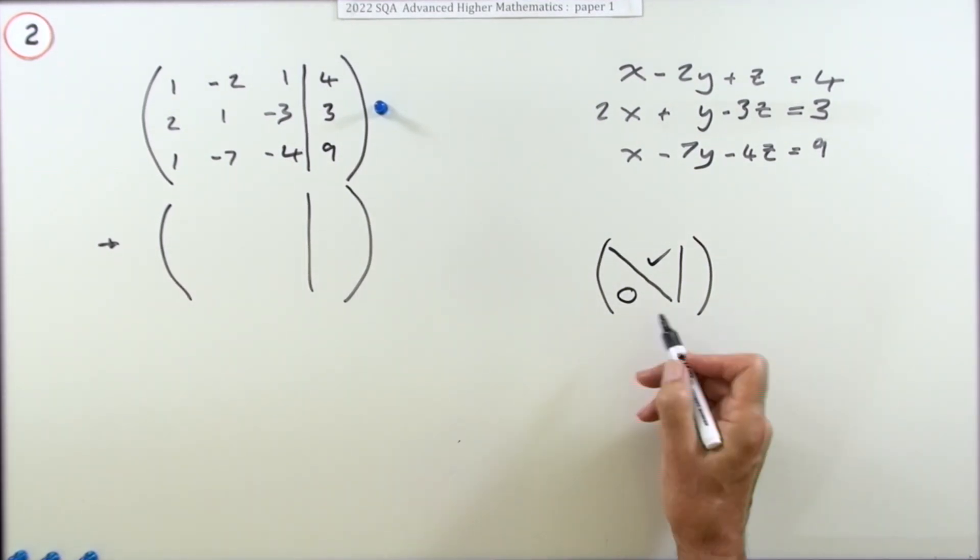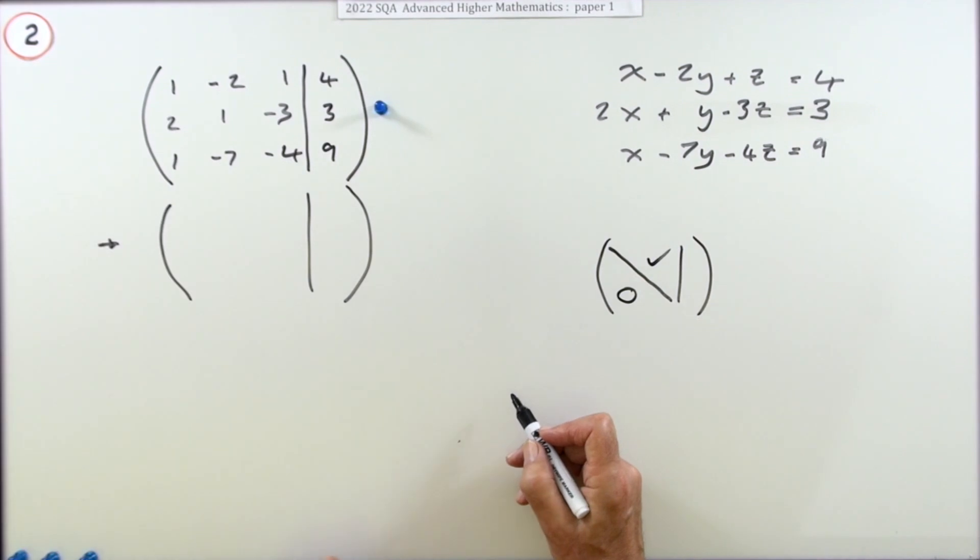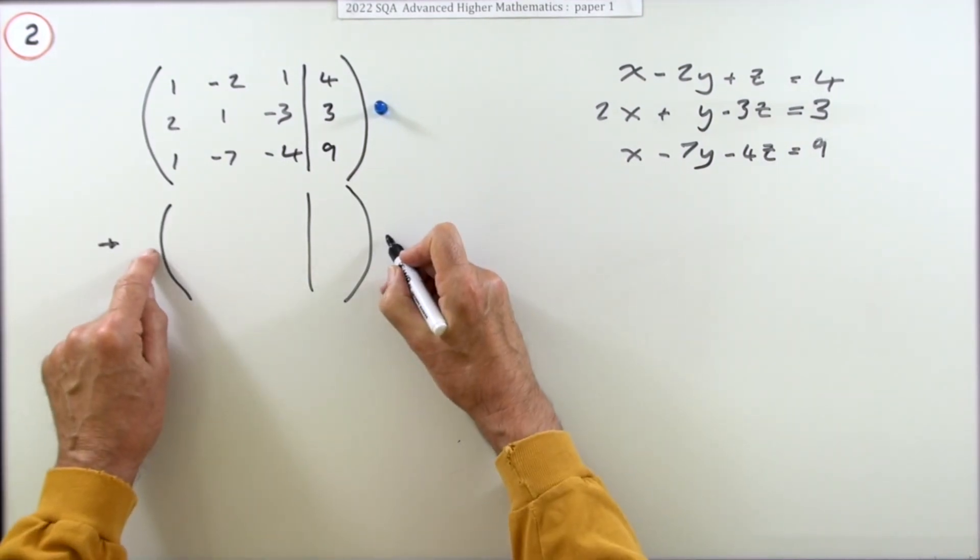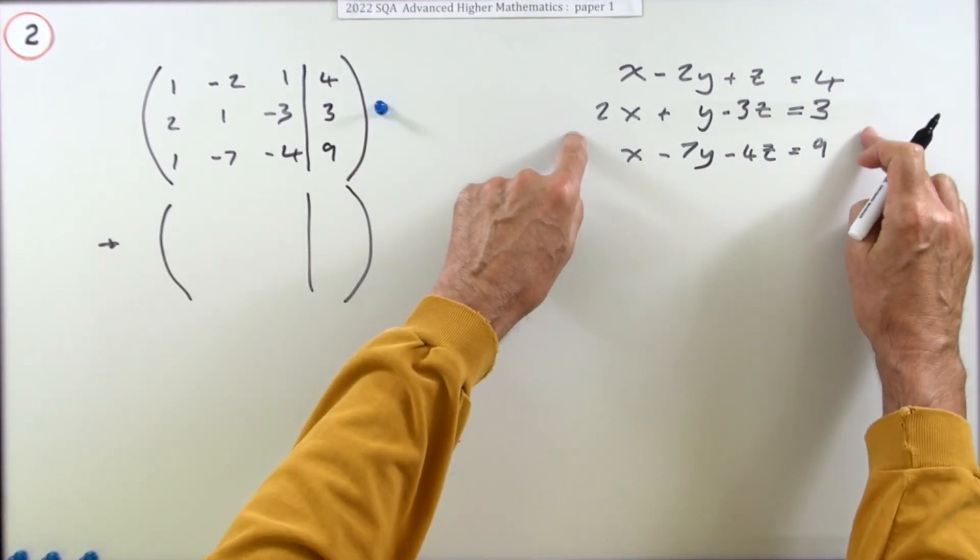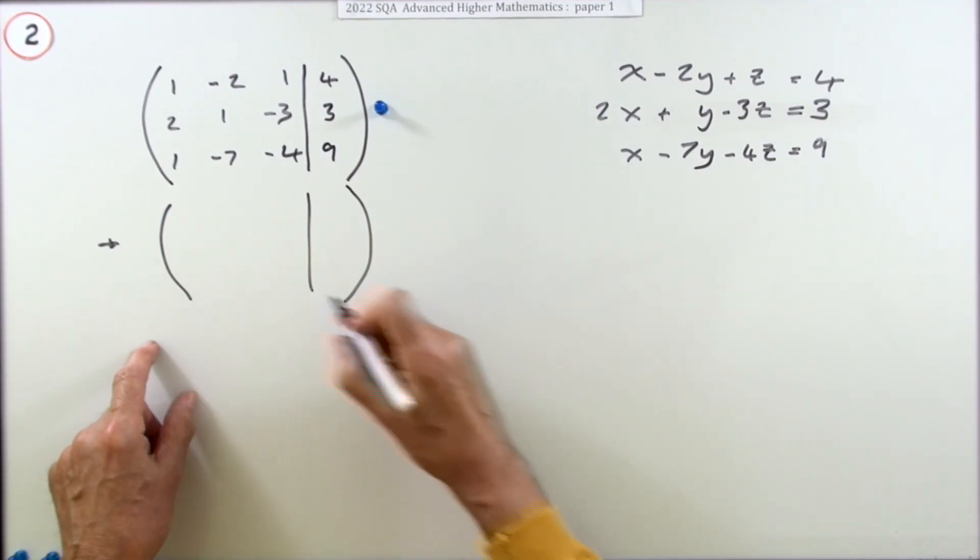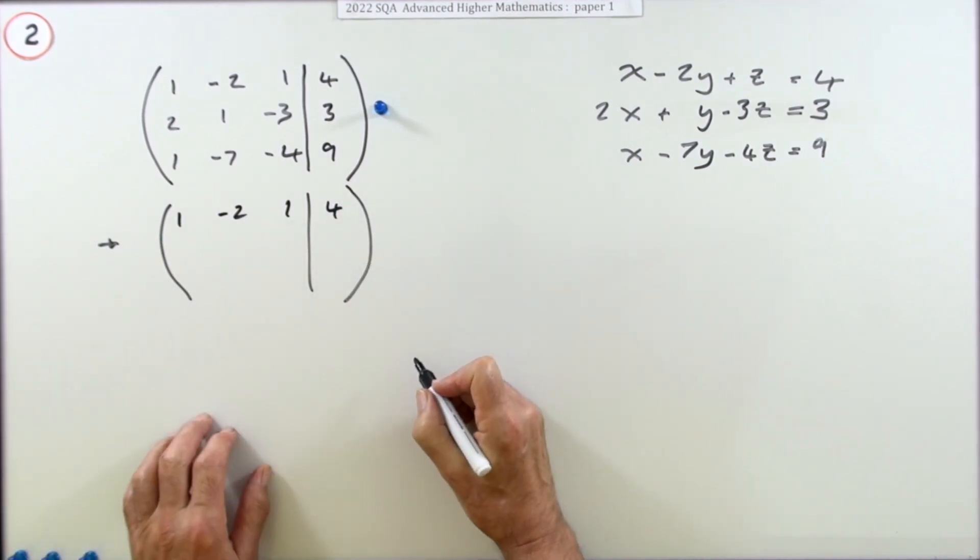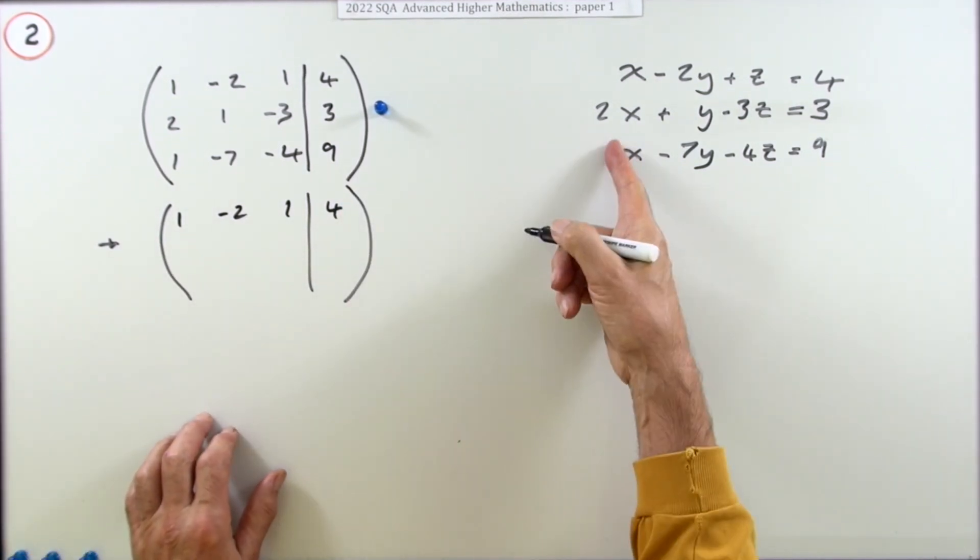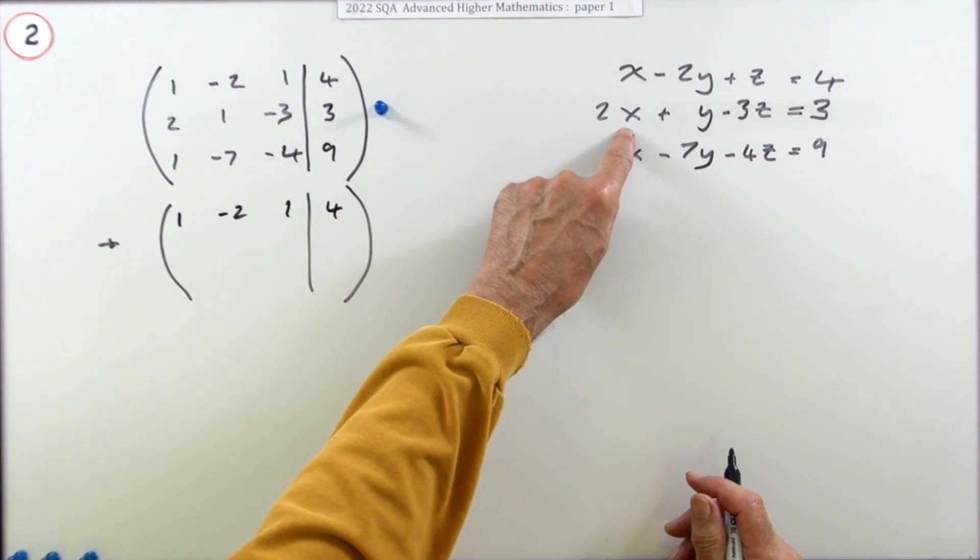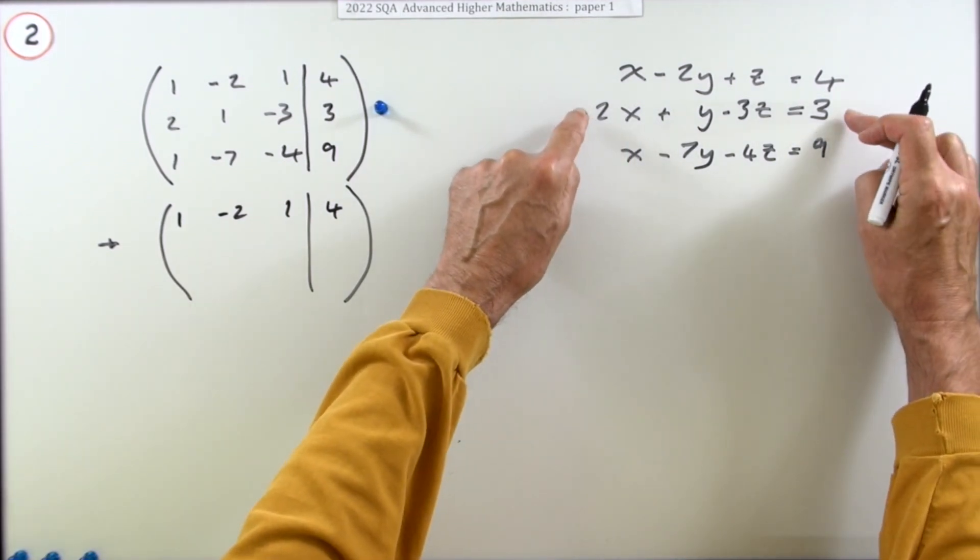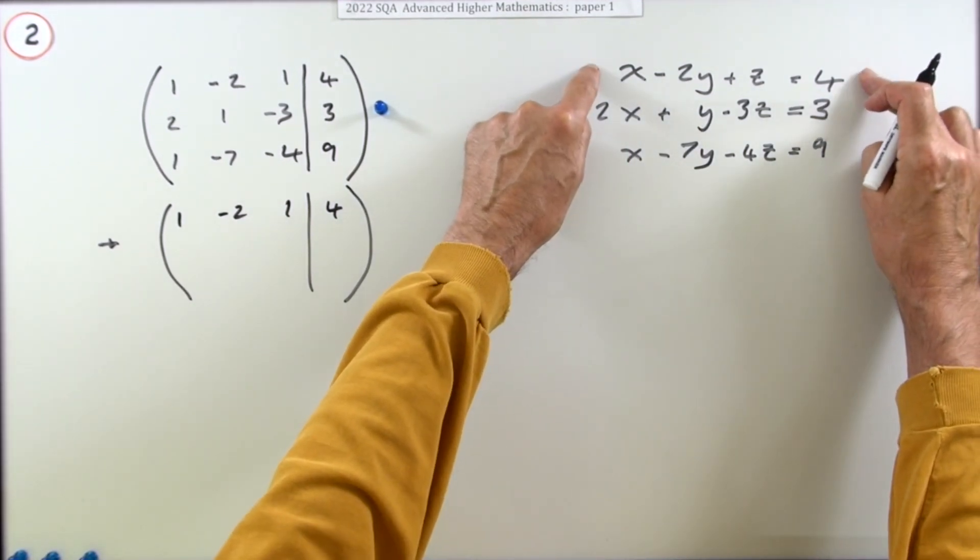The first stage in that would be: get these two to zero. So I'm going to use the elementary row operations, which are equivalent to these algebraic operations. I'm going to leave that first row alone - there's nothing wrong with that. These two I want to be zeros. So just as here you'd have said, 'How can I get rid of the x's?'